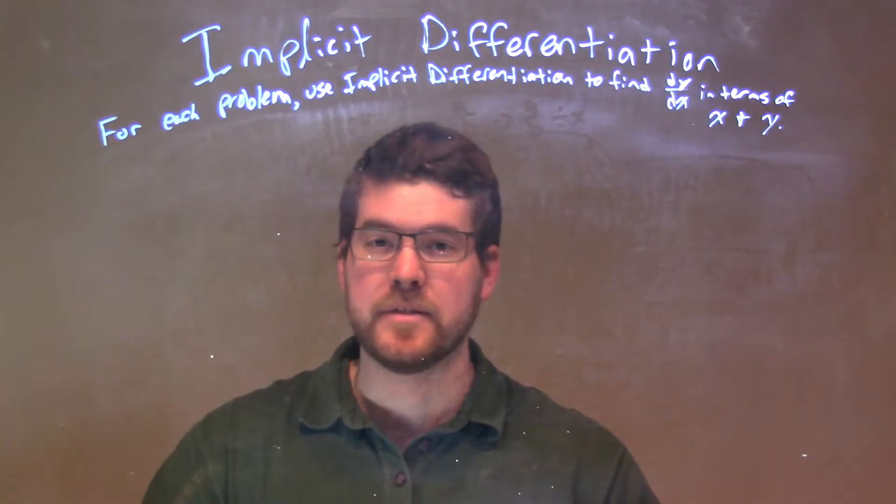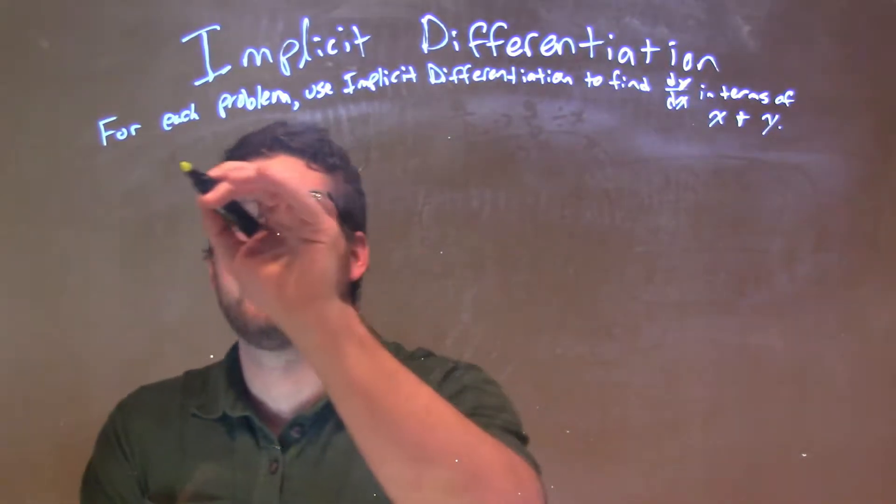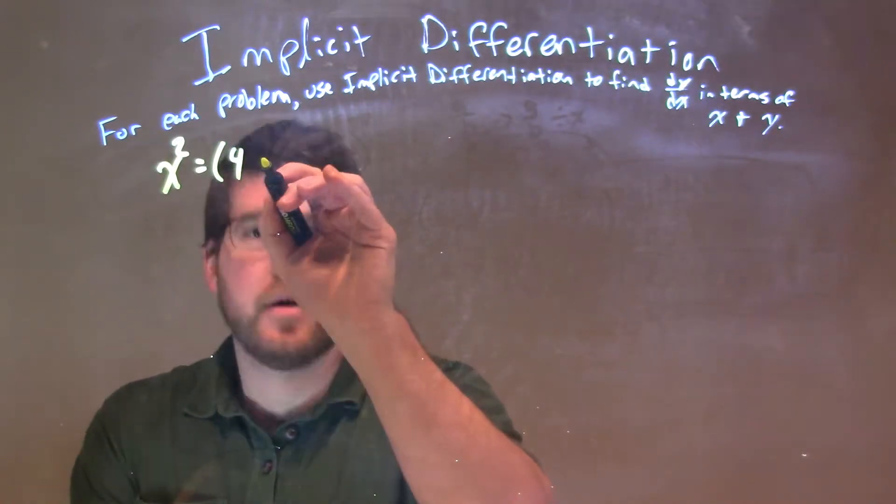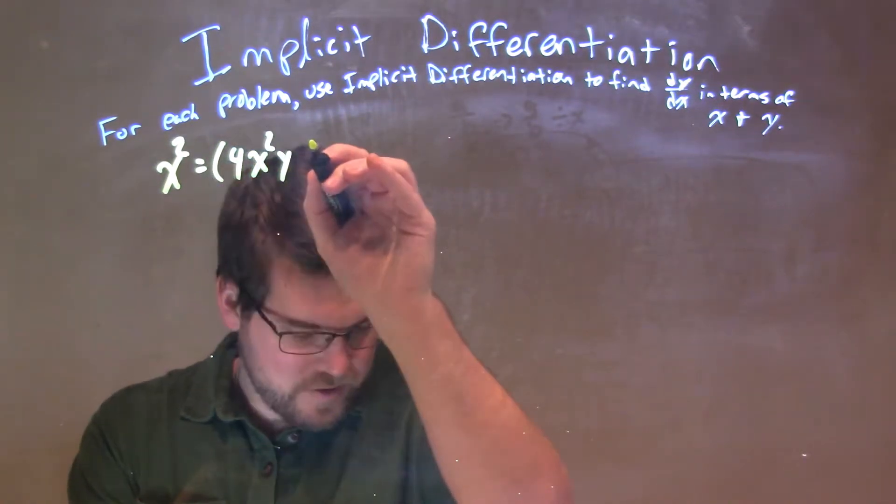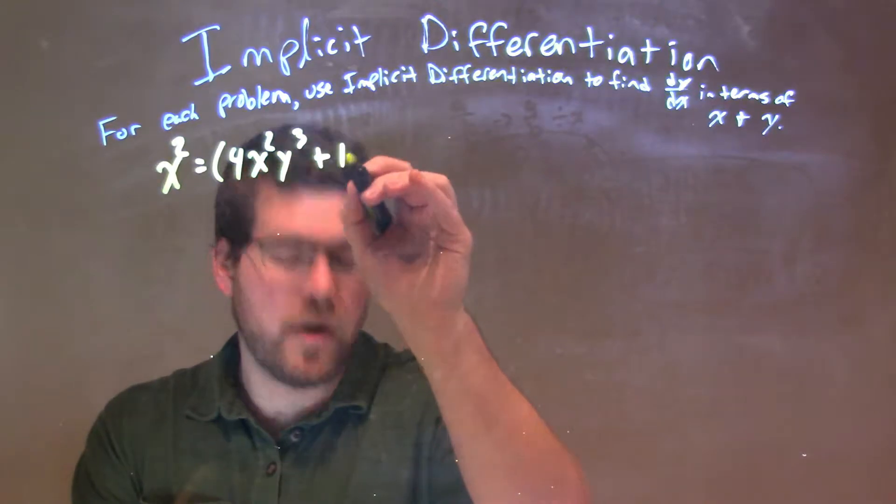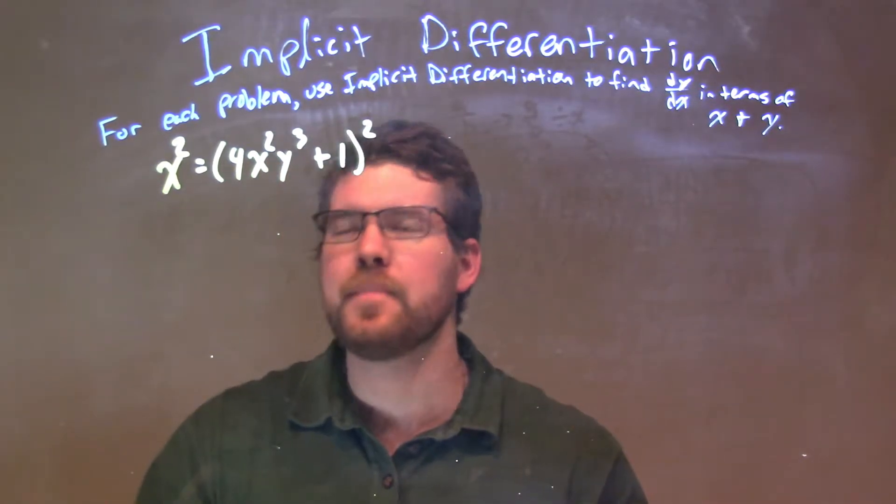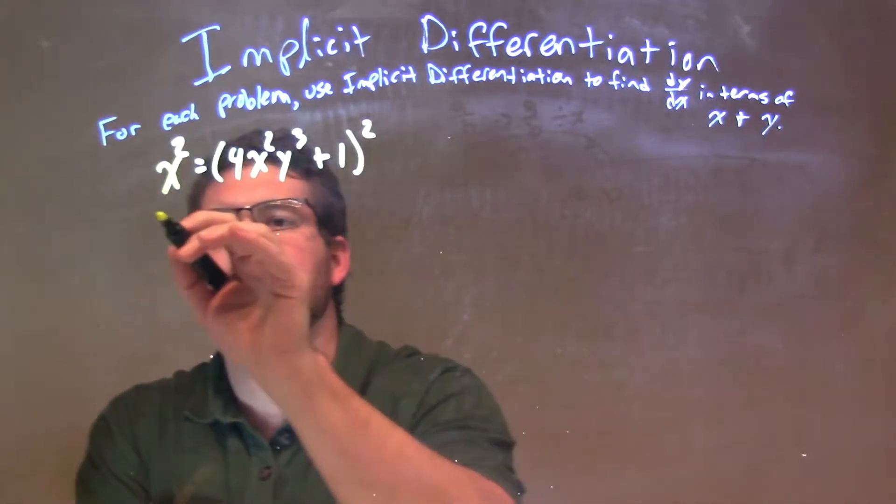So, if I was given this problem: x squared is equal to parentheses 4x squared y to the third power plus 1, squared. Okay, so from there, I'm going to derive this. Left-hand side is easy, just 2x.